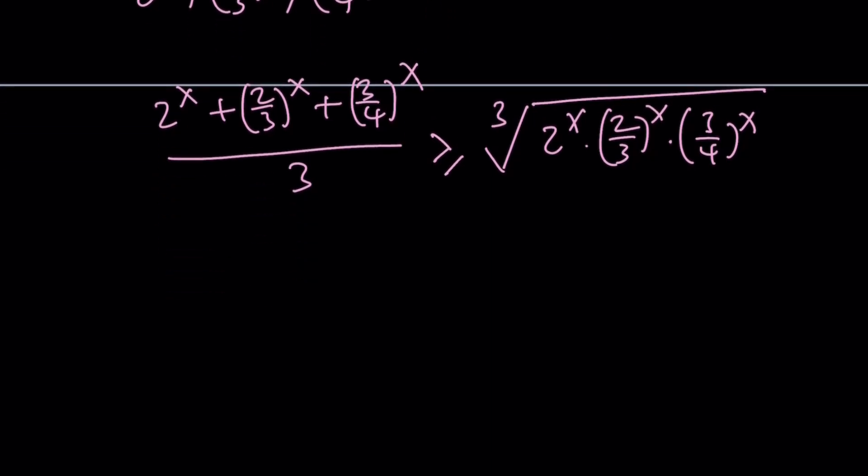We're going to multiply both sides by 3 so we can come up with our original expression on the left-hand side. Multiply both sides by 3, and you get greater than or equal to 3 times the cube root of 2^x, (2/3)^x, and (3/4)^x. Now notice that they all have the same exponent.